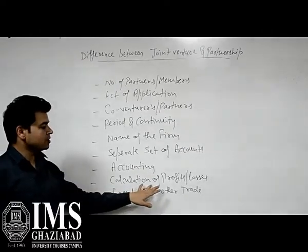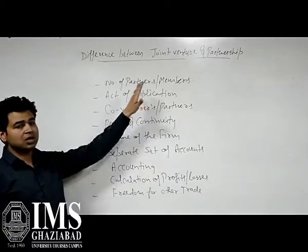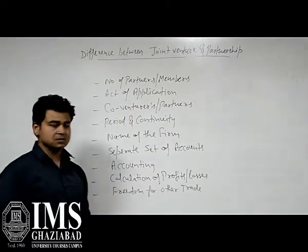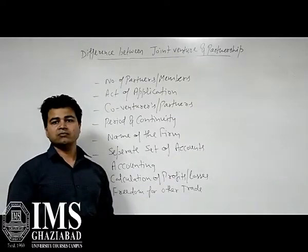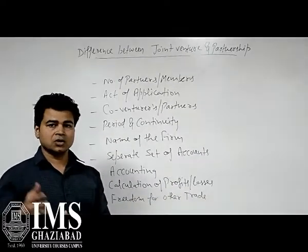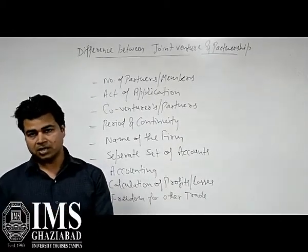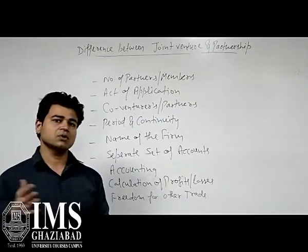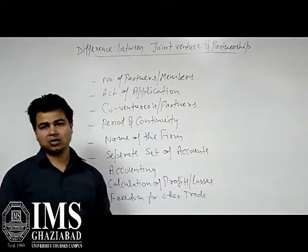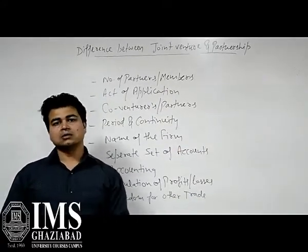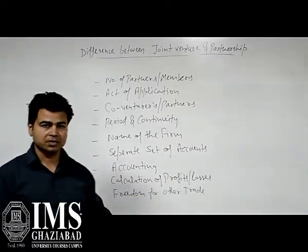Next is the calculation of profits or loss. In the case of joint venture, since it is a temporary business, calculation of profits and losses is done on the basis of liquidation — only after the particular task is completed. But in the case of partnership, as it is a continuous process, profits are calculated on an annual basis, following the going concern concept.